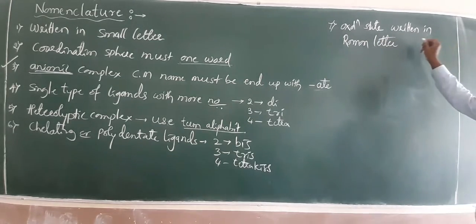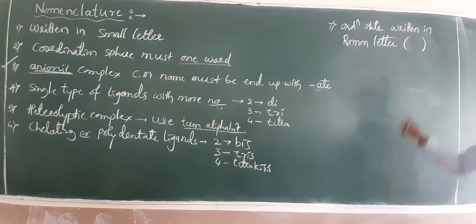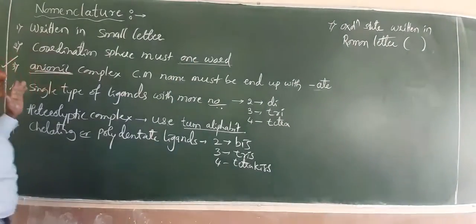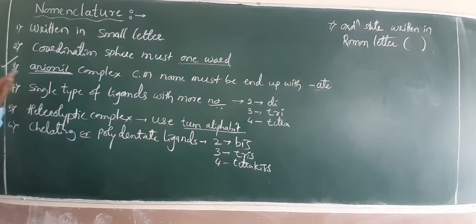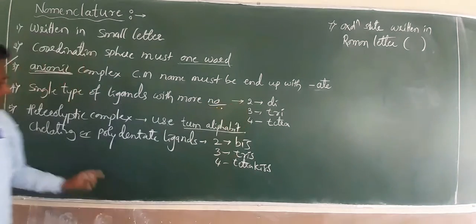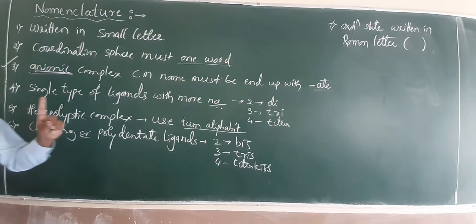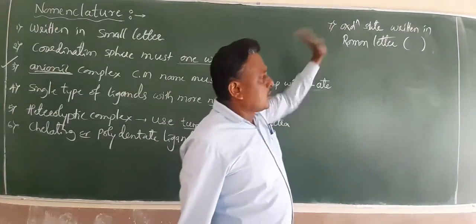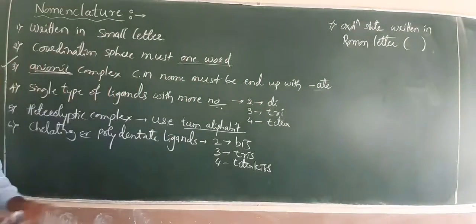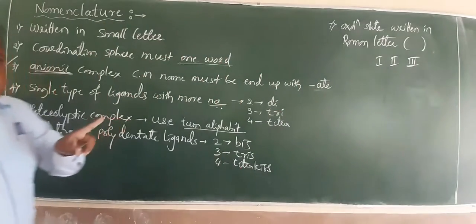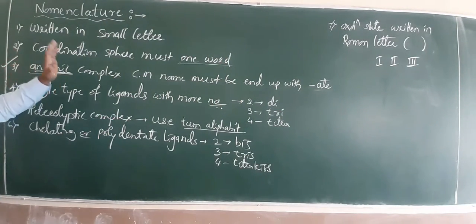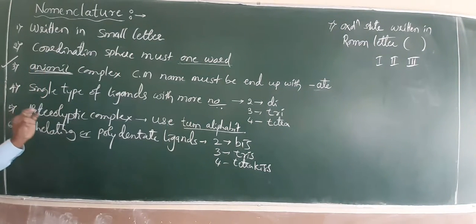One more important rule: the oxidation state must be written in Roman numerals and placed in parentheses after the metal name. For example, I, II, III are Roman numerals. These are the simple rules followed in the nomenclature of coordination complexes.